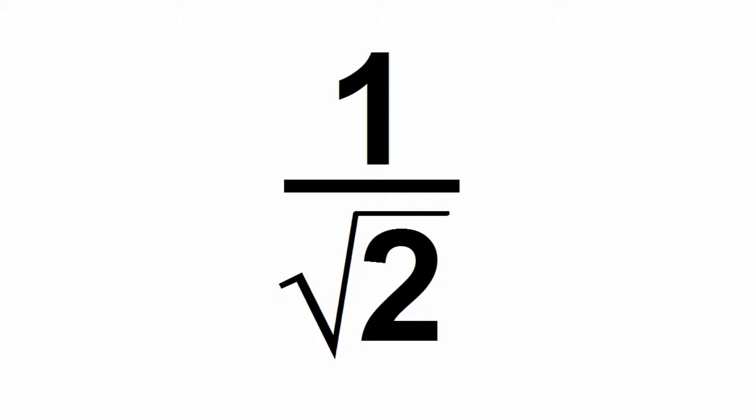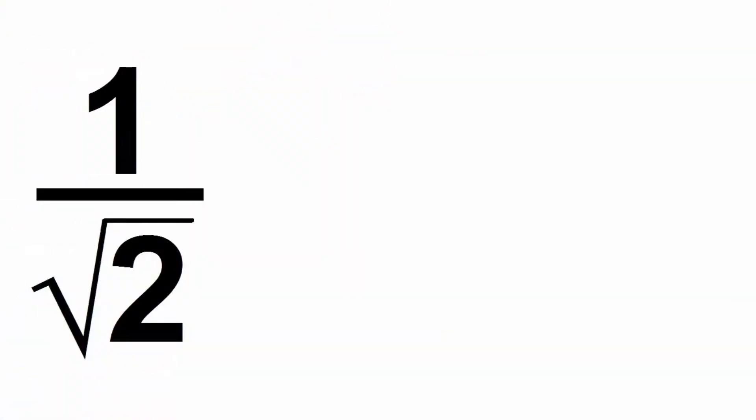Let's say we have 1 over root 2, and we want to get rid of this root 2 from the denominator. It's just unsightly. So how would we go about it? Well, in order to make sure our new fraction will be equivalent, we need to find a number that we can multiply to the numerator and the denominator that will cancel out the root 2.